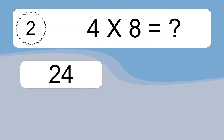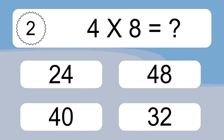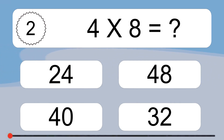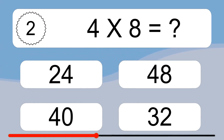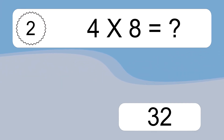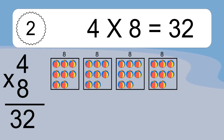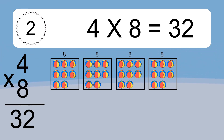4 times 8 equals what? 4 times 8 equals 32. We have 4 boxes, and each box has 8 colorful balls inside. If you count all the balls in all the boxes together, you will have 4 times 8 balls. This equals 32 balls.